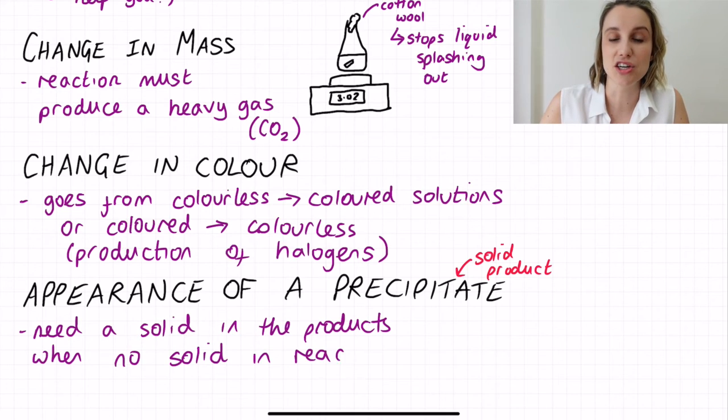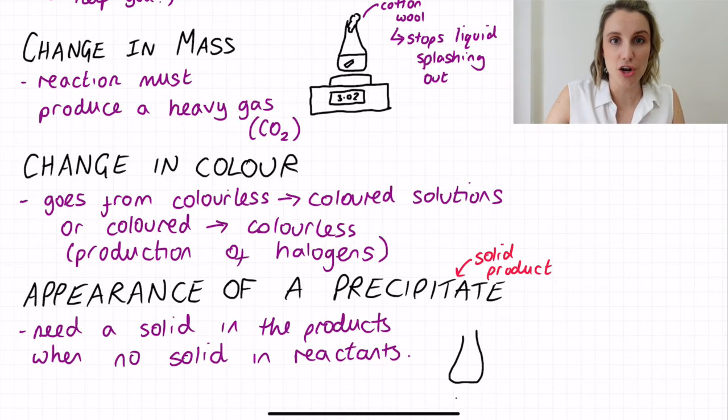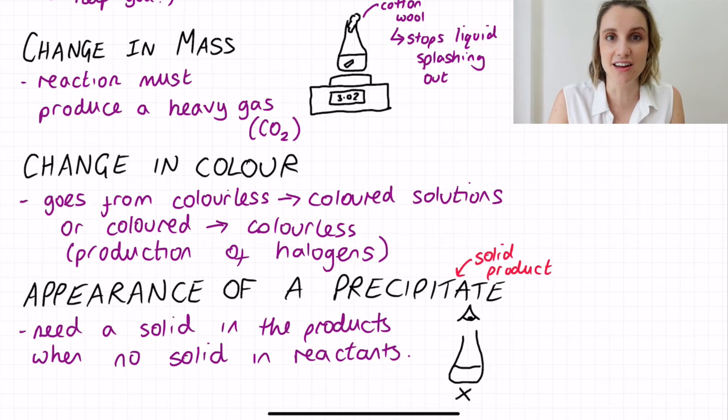Normally we use a method called the disappearing cross method, and what this is is that we look from the top and look at the reaction vessel until we can't see the X that's underneath the reaction vessel because it's being obscured by the solid that's being generated.